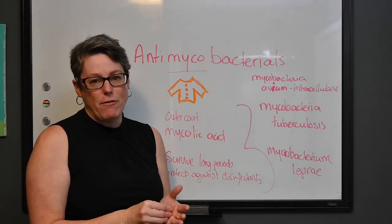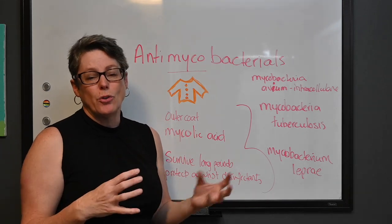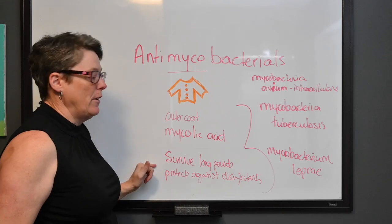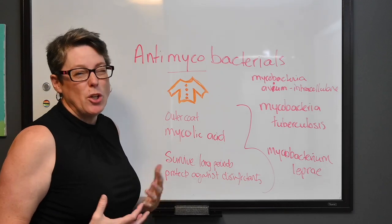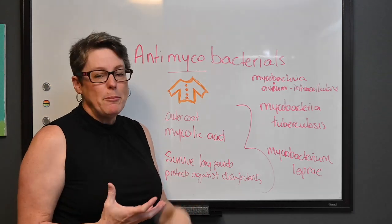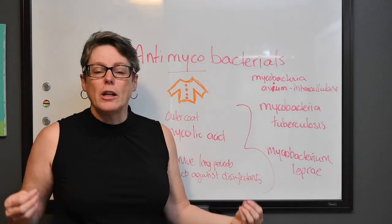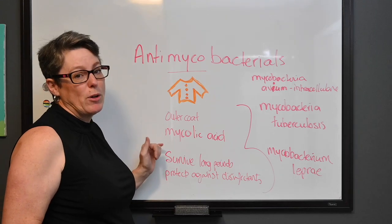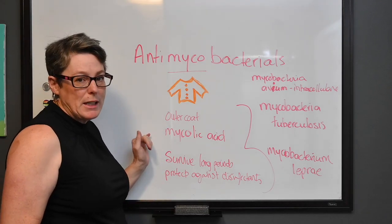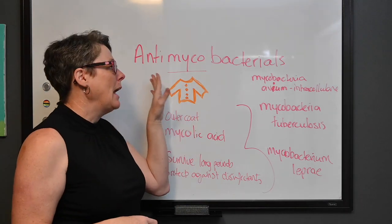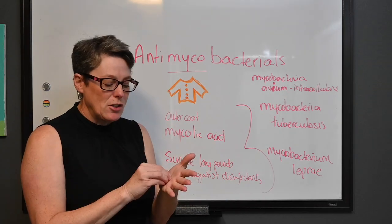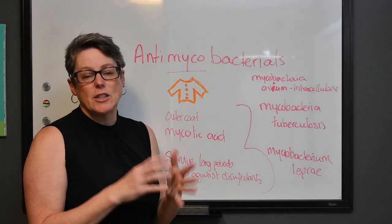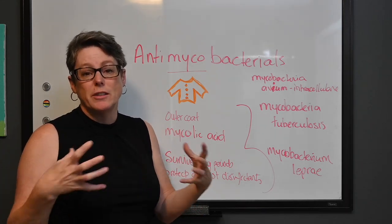What happens with this bacteria is they have an outer coat made up of mycolic acid — that's the other clue for 'myco.' This coat makes the bacteria really resistant to disinfectants; it takes an awful lot of effort to break it down to get into the cell and cause cell death. They can survive for very long periods, which is why tuberculosis and leprosy are chronic conditions. Once we break down that coat, anti-mycobacterials attach and work at the site of DNA and RNA synthesis, preventing those processes and causing cell death.